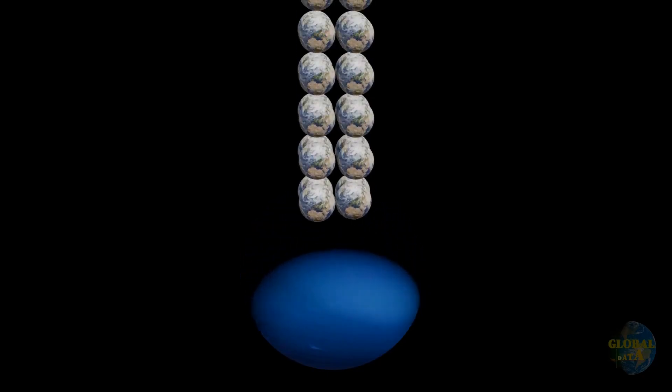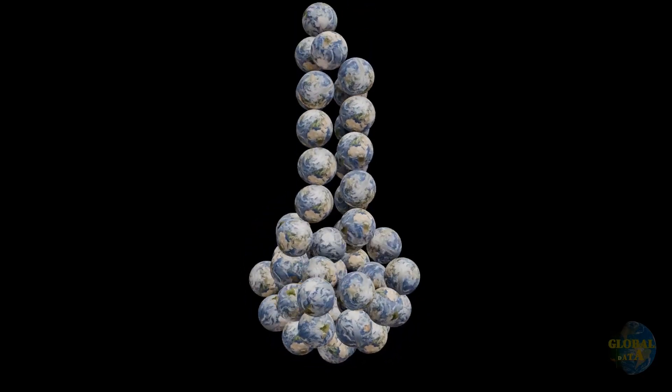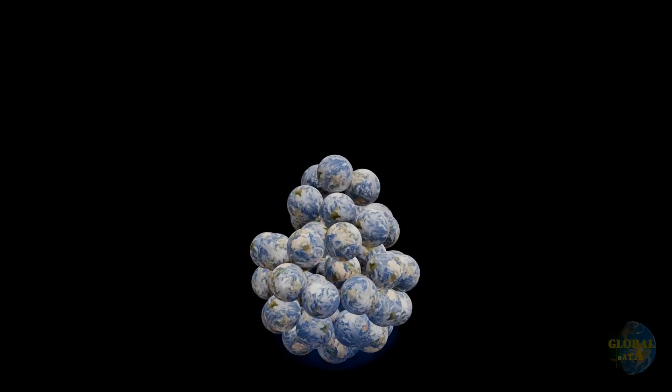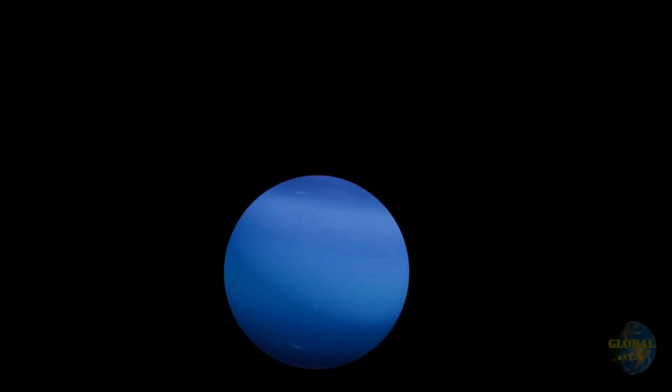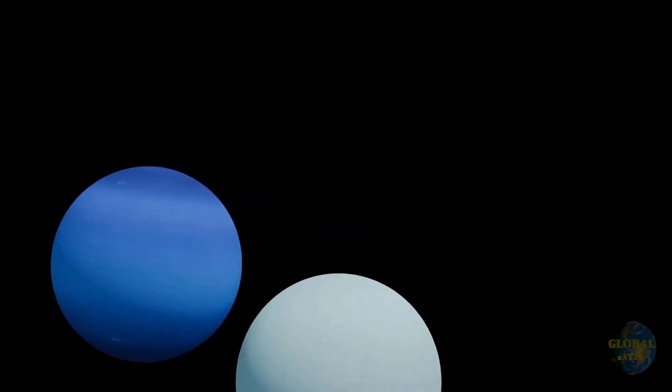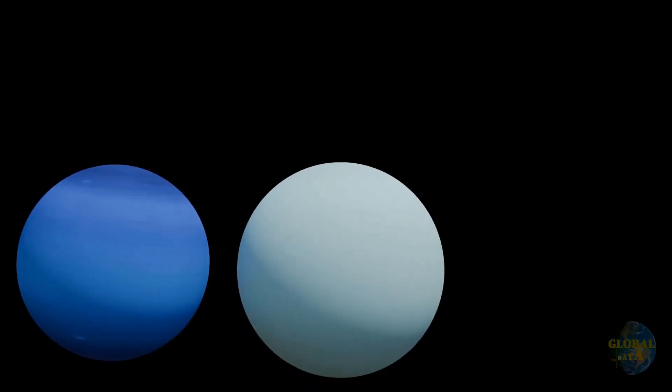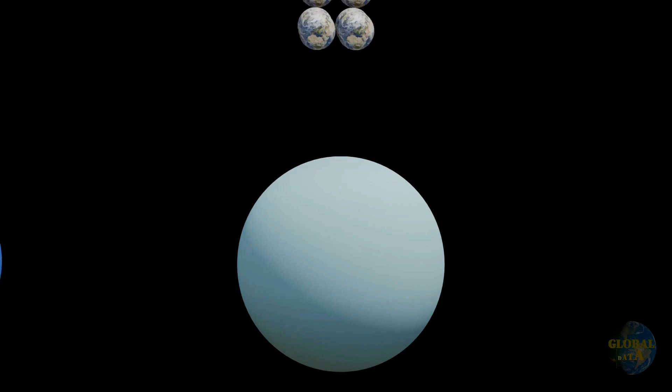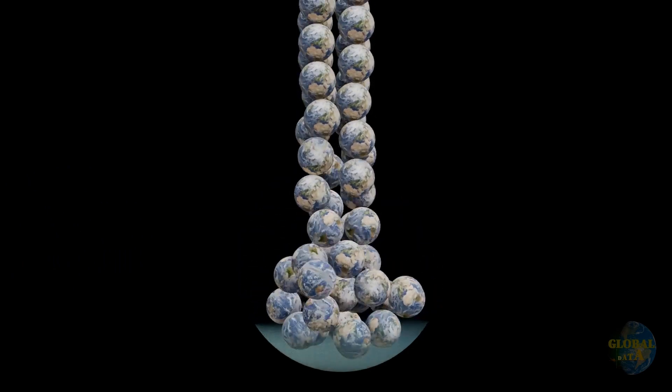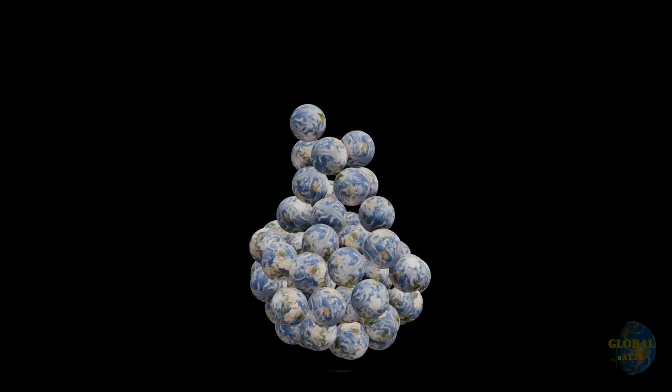Neptune is so large that 57 Earths could fit inside it. Uranus is even larger. In fact, 64 Earths could fit inside it.